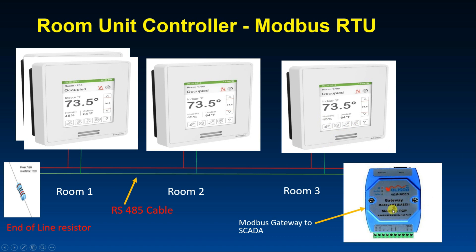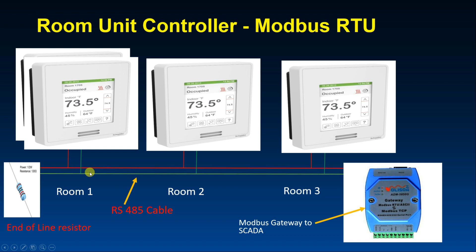Why use a Modbus gateway? It takes the information from the RTU devices and passes it to Modbus TCP via a LAN Ethernet cable, which goes to our SCADA or PLC so we can control all the fan coils from a central location. Also note that we have a termination resistor on the communication line for impedance matching, ensuring data is transmitted and received properly by the gateway.